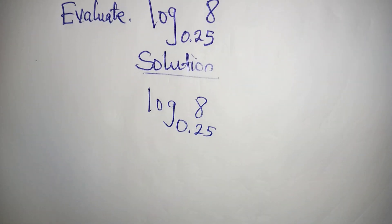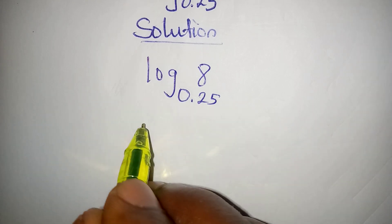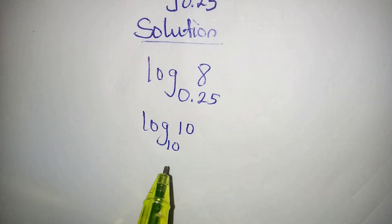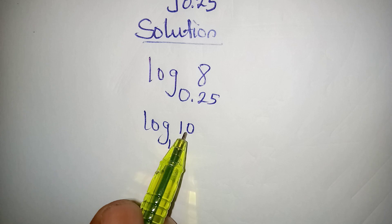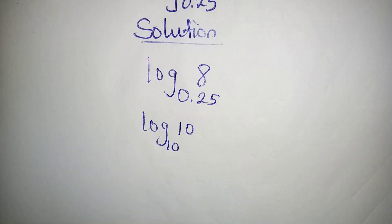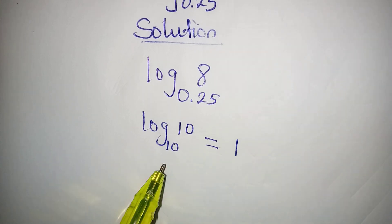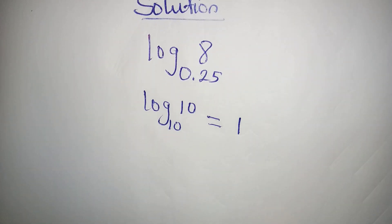Now look at what we are going to do. Remember, if you have log 10 to base 10, it means what would you raise 10 to to get you 10. That's going to be 1 because 10 to the power 1 will give you 10, and that's what this means.